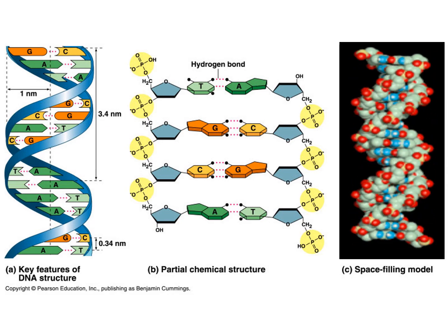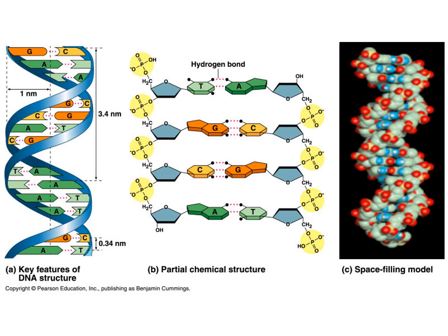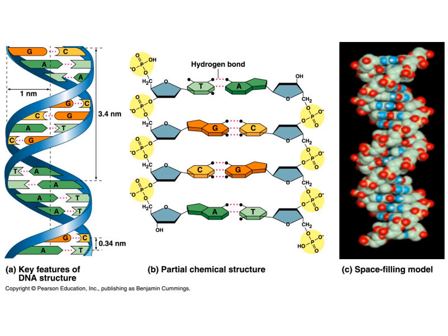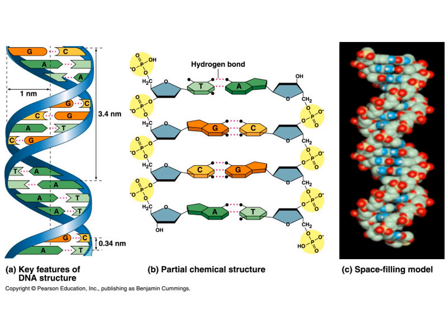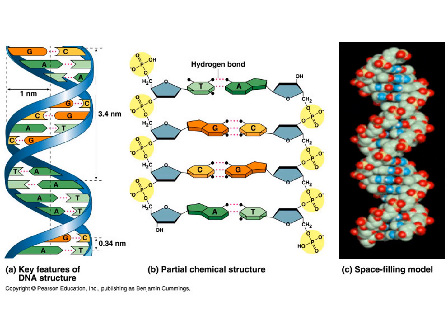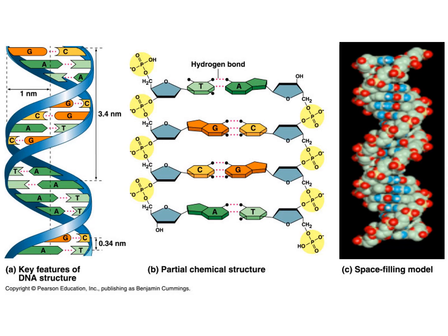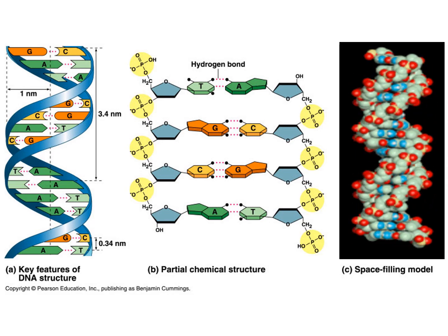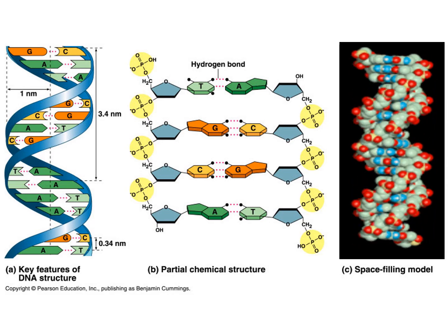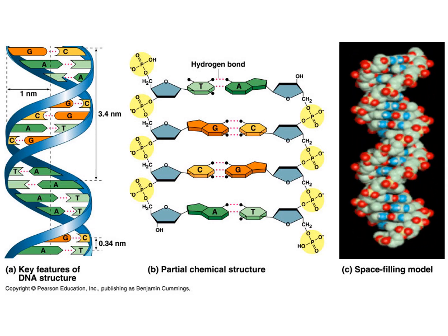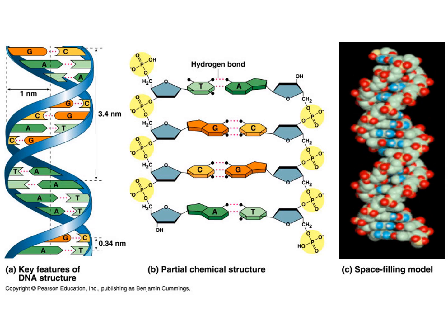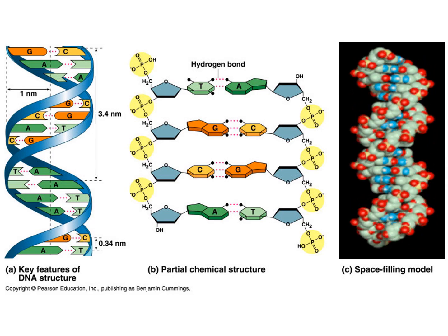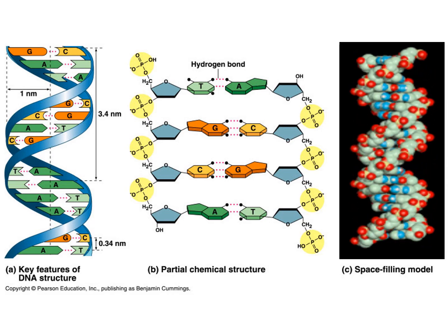One thing to note is that the bases always line up in a very specific way: adenine and thymine bond together, and guanine and cytosine bond together. Note that G and C make three hydrogen bonds, while A and T make only two. We always have this arrangement holding the DNA molecule together. Hydrogen bonds are quite weak, but there are lots of them, so this is a stable molecule. At the same time, an enzyme called RNA polymerase can come in, unzip a few of those rungs at a time, and read the information — and as that enzyme travels down the middle of the DNA molecule, it zips back up behind it.